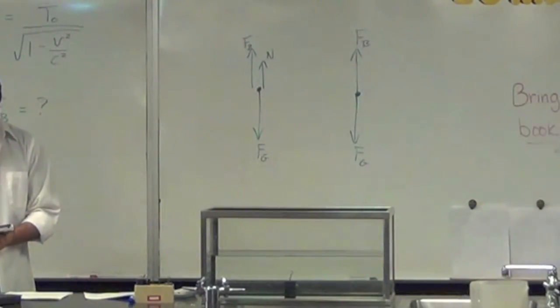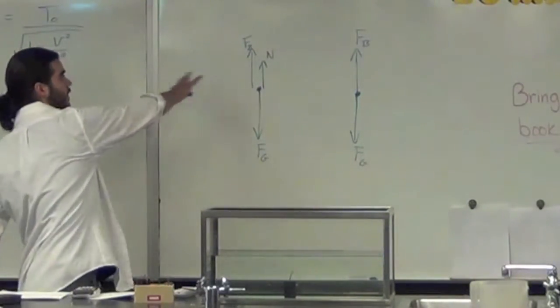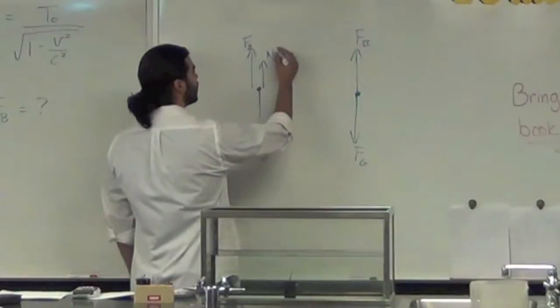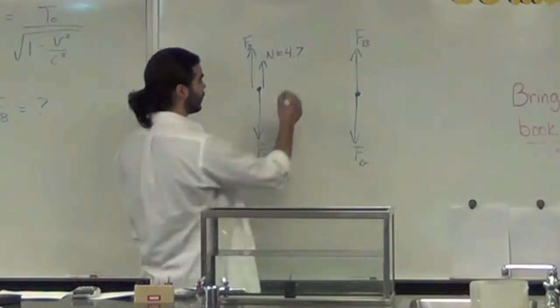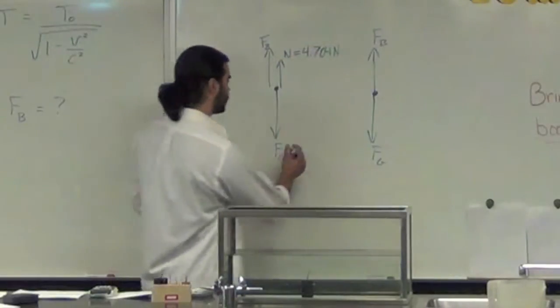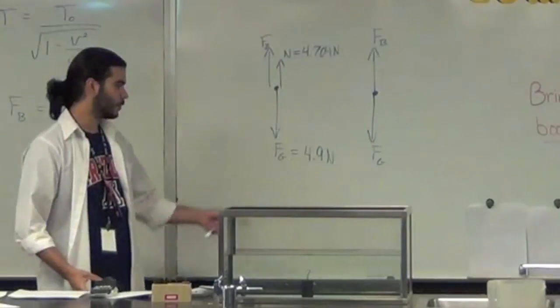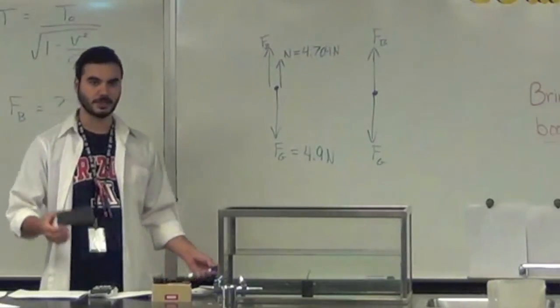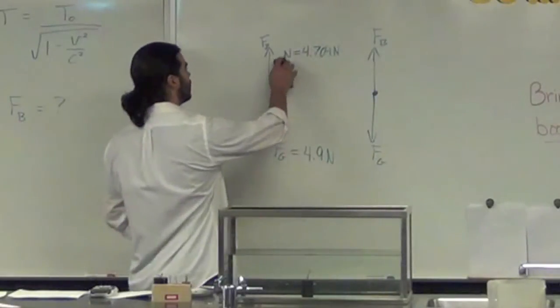If we actually had a scale at the bottom there, it would be reading 4.7 newtons. So again, we're in a situation like this where our normal force, what the scale is reading, is 4.704 newtons. What would the force of gravity be? Yeah, 4.9. How did you get that? The force of gravity is just mass times the acceleration due to gravity, so the mass is 0.5 kilograms, and the acceleration due to gravity is 9.8. Gives you 4.9 newtons, but the scale is only reading 4.7 newtons.